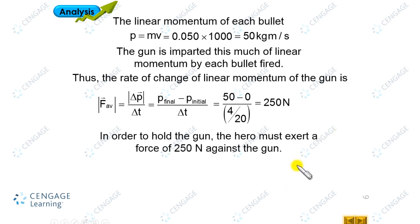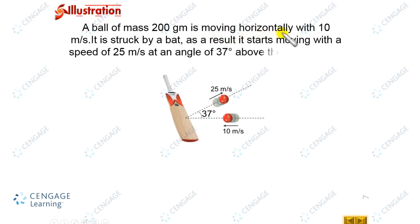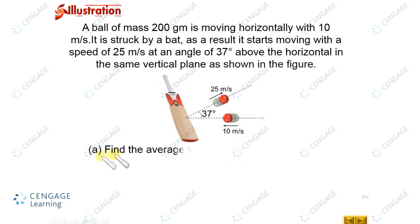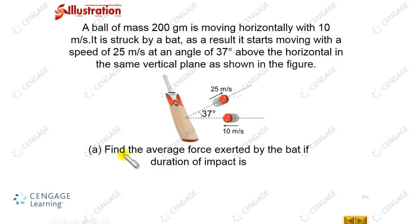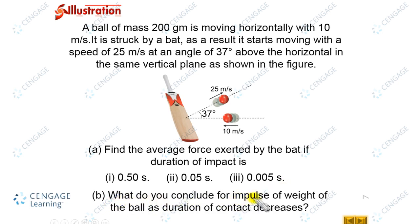In the next illustration, a ball of mass 200 grams is moving horizontally at 10 m/s. It is struck by a bat, and as a result starts moving at 25 m/s at an angle of 37 degrees above the horizontal in the same vertical plane. We need to calculate the average force exerted by the bat for three different durations of impact: first 0.50 s, second 0.05 s, and third 0.005 s. The second part asks what we can conclude about the impulse of the weight of the ball as the duration of contact decreases.